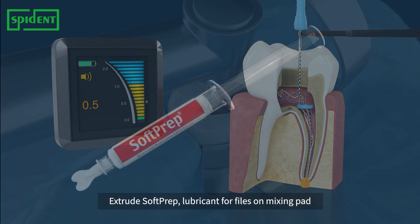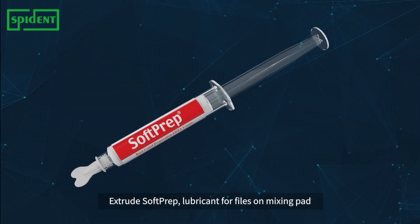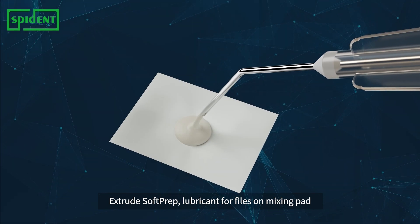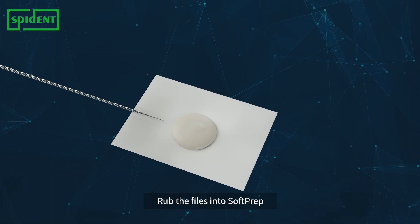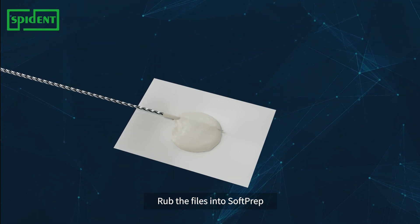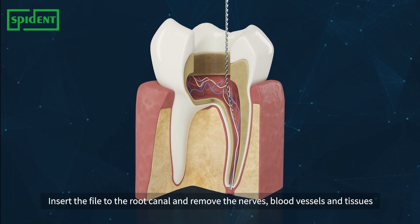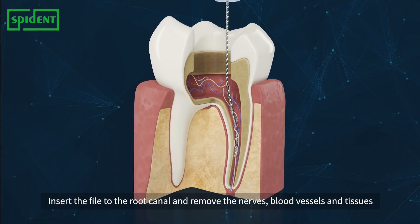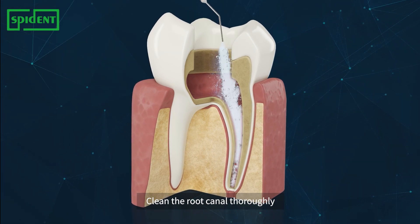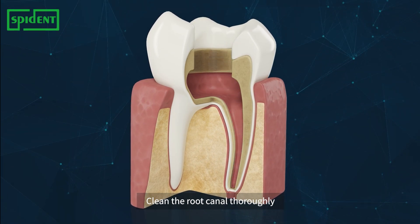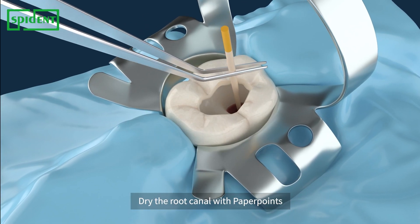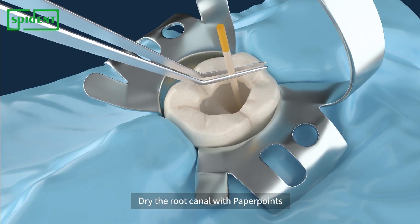Use a file with soft prep to remove the infected pulp and clean with NaOCl after each file. Then use paper points to absorb the remaining water in the canal.